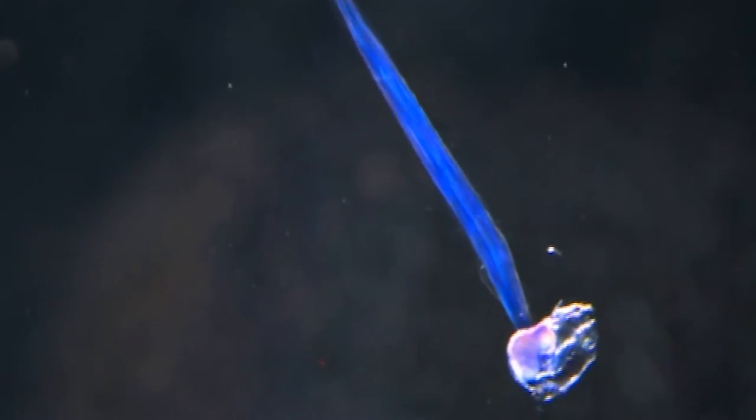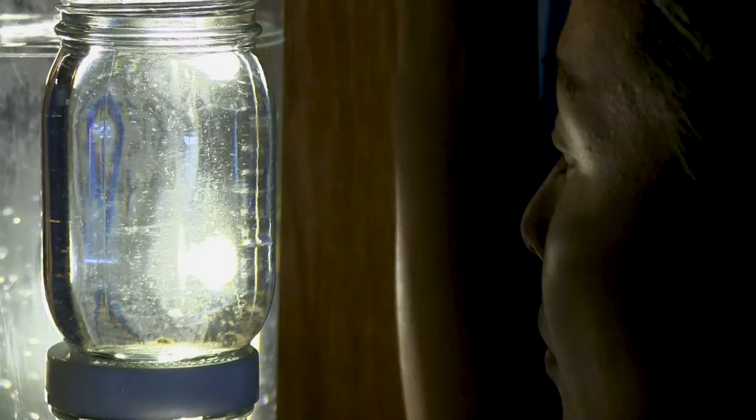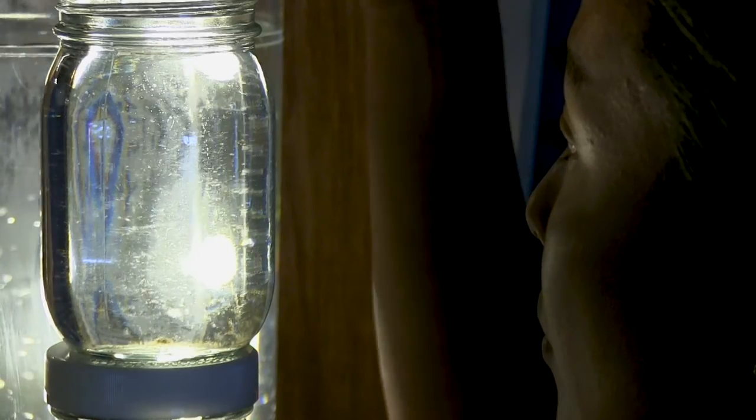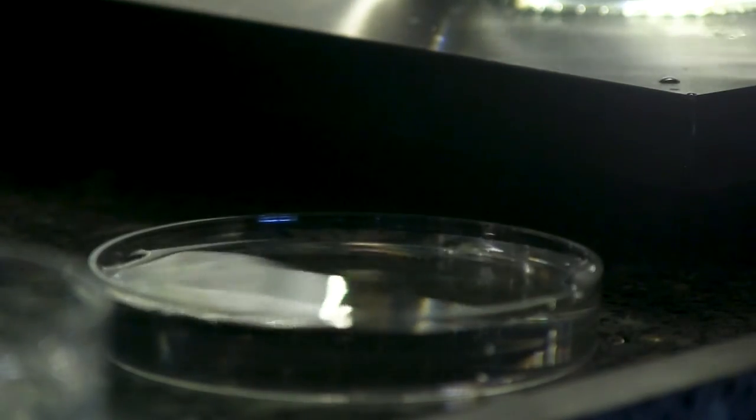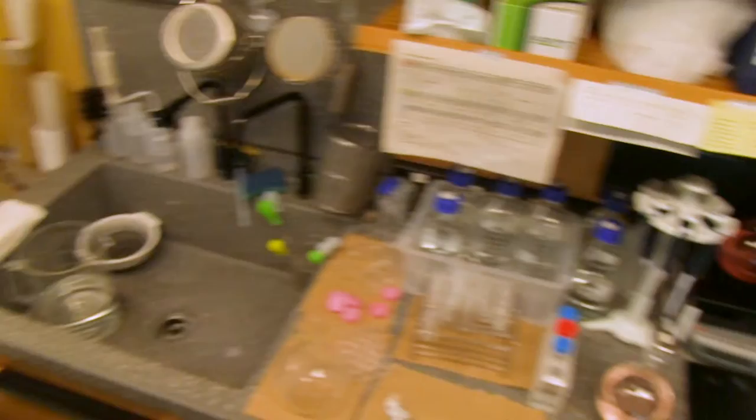They are a very good model organism because their development is very fast. It's only five days at 23 degrees Celsius and they go from eggs to adults. Also they are transparent throughout their lives so it's really easy to image them.